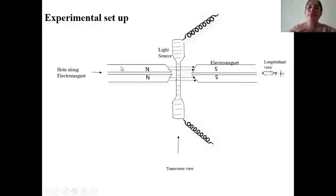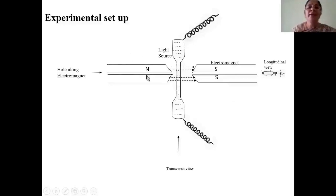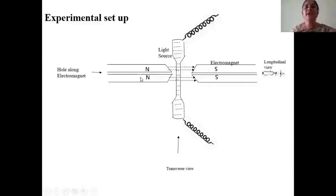A long iron piece is shaped into a conical shape so that the flux lines get focused. A hole is drilled along this iron piece on both poles so that light can pass through the opening. When a coil is wound on the iron piece and electric current is passed, the iron piece becomes an electromagnet.